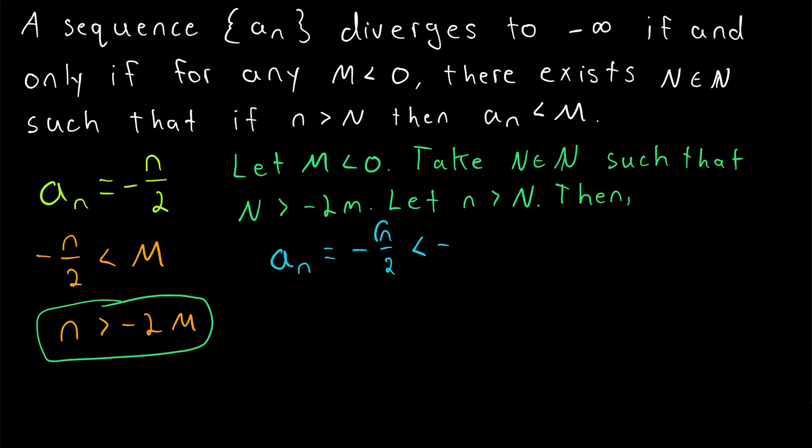So we're talking about this expression, replacing n with negative 2M, so that we have negative negative 2M over 2. And I just noticed this M doesn't look at all like that M. They're supposed to be the same, so let me rewrite that. So make sure you understand this inequality.